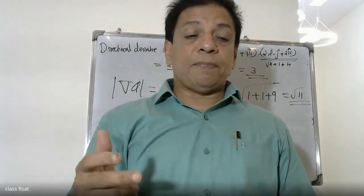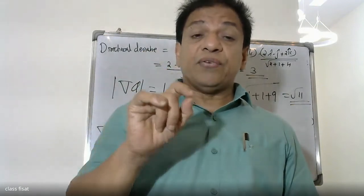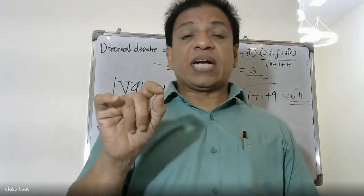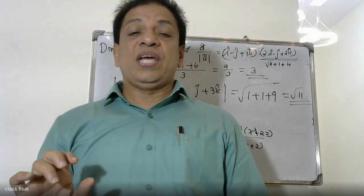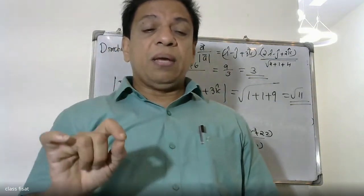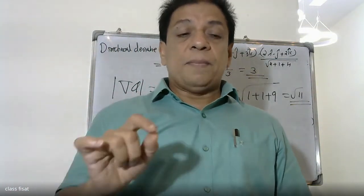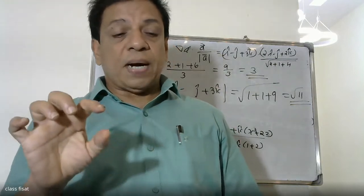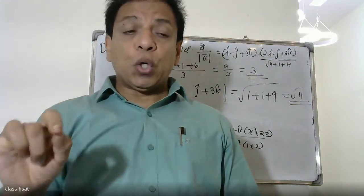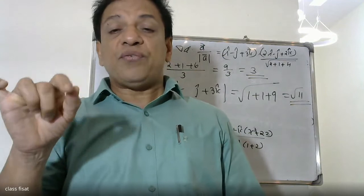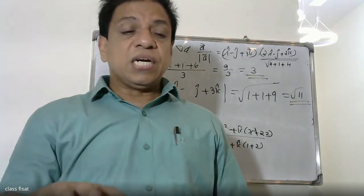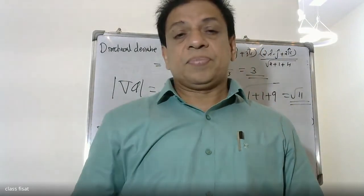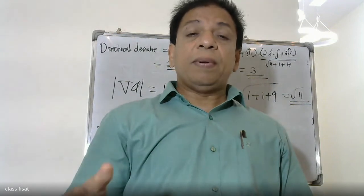So del φ = i - j + 3k. The directional derivative formula is del φ · vector a divided by modulus of vector a: (i - j + 3k) · (2i - j + 2k) divided by modulus, giving the directional derivative equal to 3. Also, the maximum directional derivative is |del φ|.